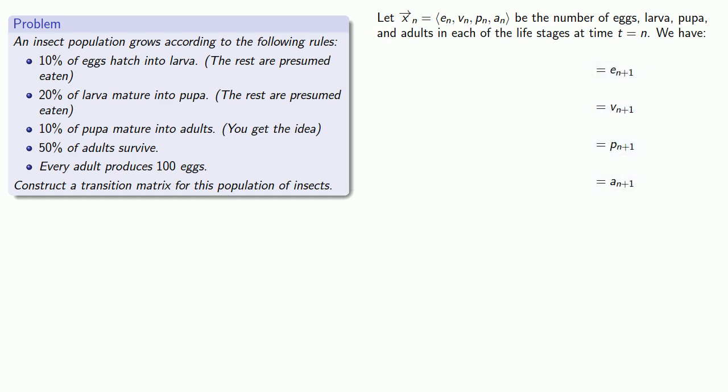Now, a useful rule in life and in mathematics is that it's easier to figure out where you've come from than it is to figure out where you're going. So let's take a look at the number of eggs. If we look at how our insects live, we see that the only way that we get eggs is from the adults, and every adult produces 100 eggs.